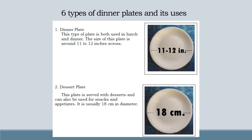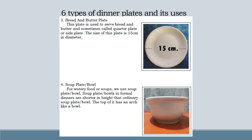Six types of dinner plates and their uses. Number 1: Dinner plate — this type of plate is used in both lunch and dinner. The size of this plate is around 11 to 12 inches across. Number 2: Dessert plate — this plate is served with desserts and can also be used for snacks and appetizers. It is usually 18 cm in diameter. Number 3: Bread and butter plate — this plate is used to serve bread and butter, sometimes called quarter plate or side plate. The size of this plate is 15 cm in diameter.